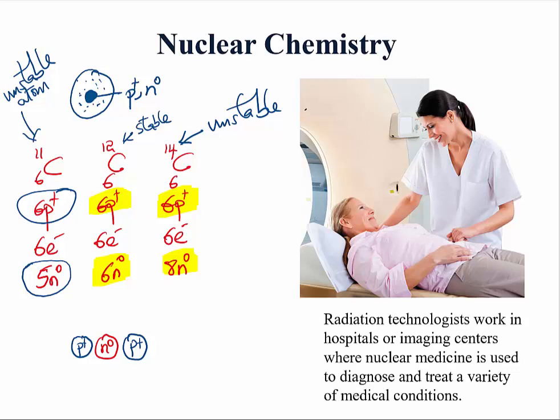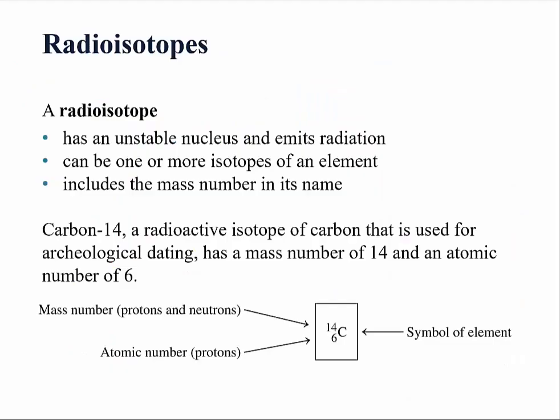Let us focus on the unstable atoms. They will disintegrate — they will break apart — because when two positively charged protons get too close, the energy of the nucleus will be too high, and the nucleus would have to disintegrate. These unstable atoms are called radioisotopes, and they will break apart by releasing radiation. The question is: what type of radiation do they emit when they disintegrate?